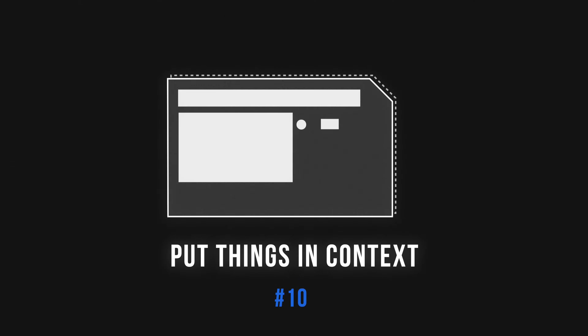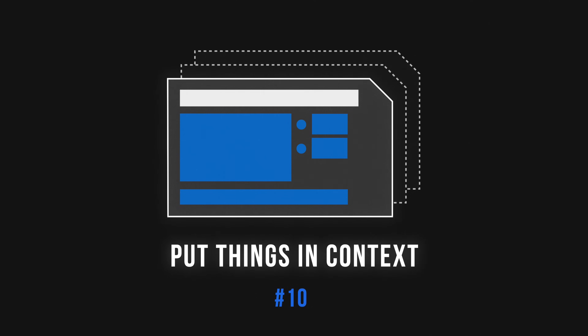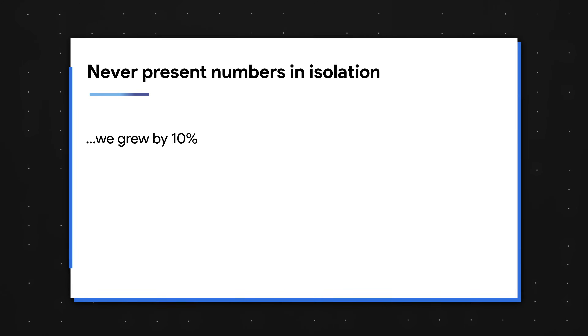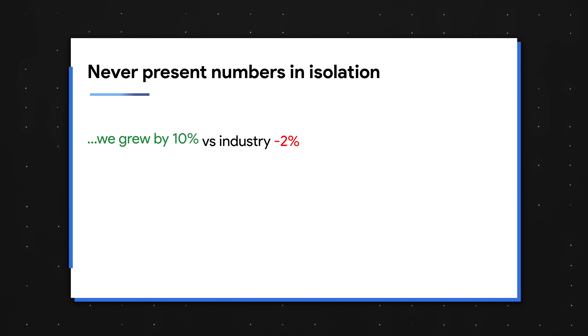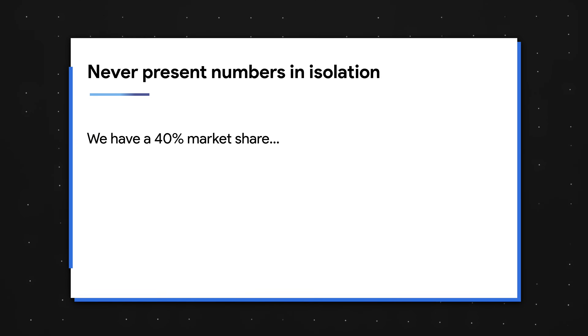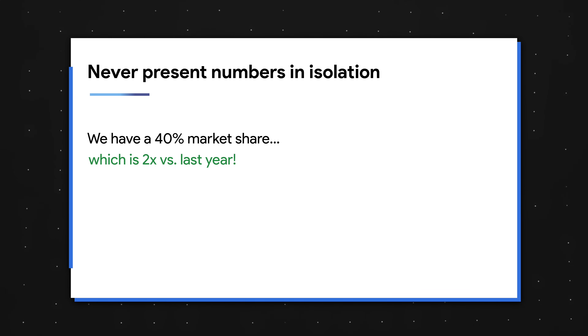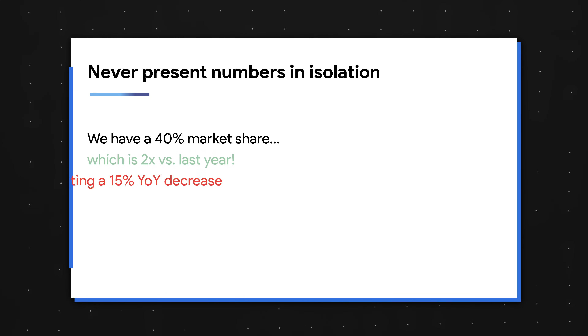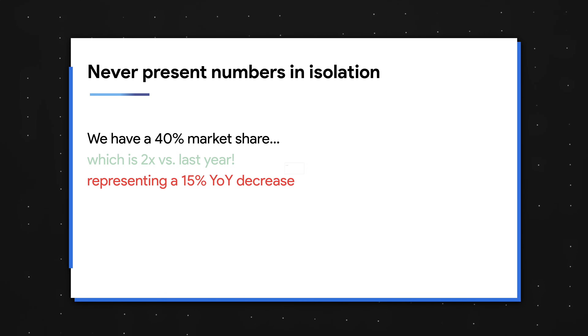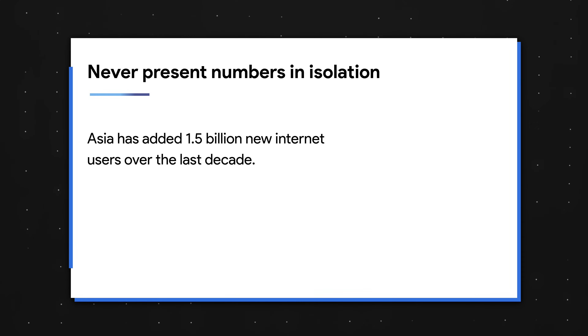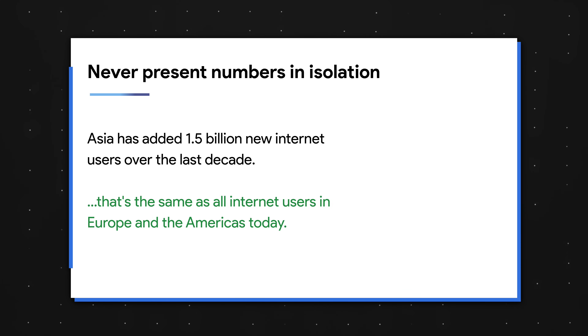Tip number 10 is probably the simplest but most overlooked: put things in context. The golden rule is to never present numbers in isolation. A 10% growth rate might seem low until you find out the industry as a whole decreased by 2%. We don't know whether 40% market share is good or bad until we're told it increased 2x from last year versus a decrease of 15%. Asia has added 1.5 billion new internet users over the past decade — and that's the same as all internet users in Europe and the Americas today.